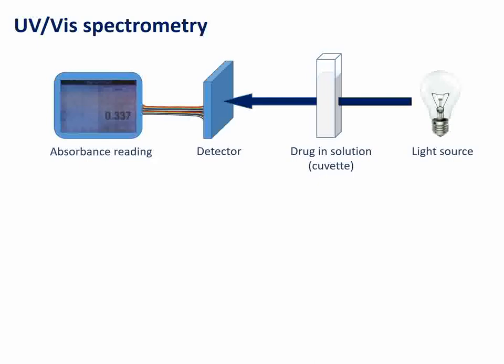The light source has something called a monochromator that the light will pass through, which enables you to fix the wavelength of light passing through the drug in solution — so you can be very specific that the light is only of a certain wavelength. The light beam passes through the drug in solution held in the UV cuvette, and the light which is able to permeate through reaches the detector, giving you an absorbance reading. The absorbance reading is in what we refer to as arbitrary units, so in terms of concentration it doesn't tell you that much directly.